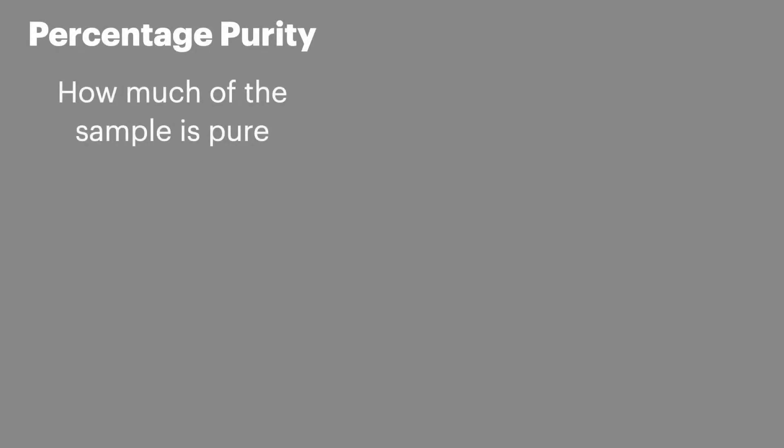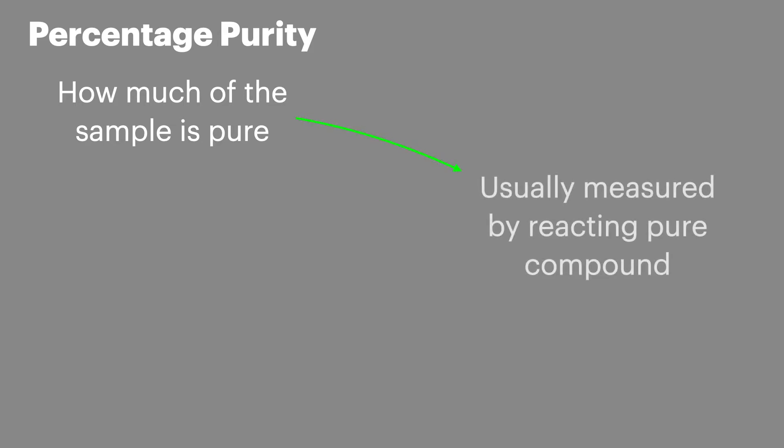Percentage purity is very similar to percentage composition and percentage yield. It's used when we want to express how much of the pure compound is present in a sample. This is particularly useful when making chemicals such as drugs, and we want to evaluate how successful the reaction has been, or when making different metal alloys. It's usually measured by reacting the pure compound with another reagent, and this is often done as a neutralization reaction.